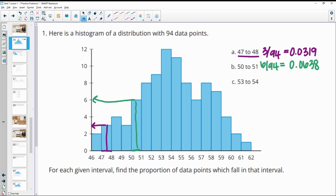The last one is from 53 to 54, so that's way up here, and that's 12 data points out of 94. When we divide that in our calculator, we get 0.1277.